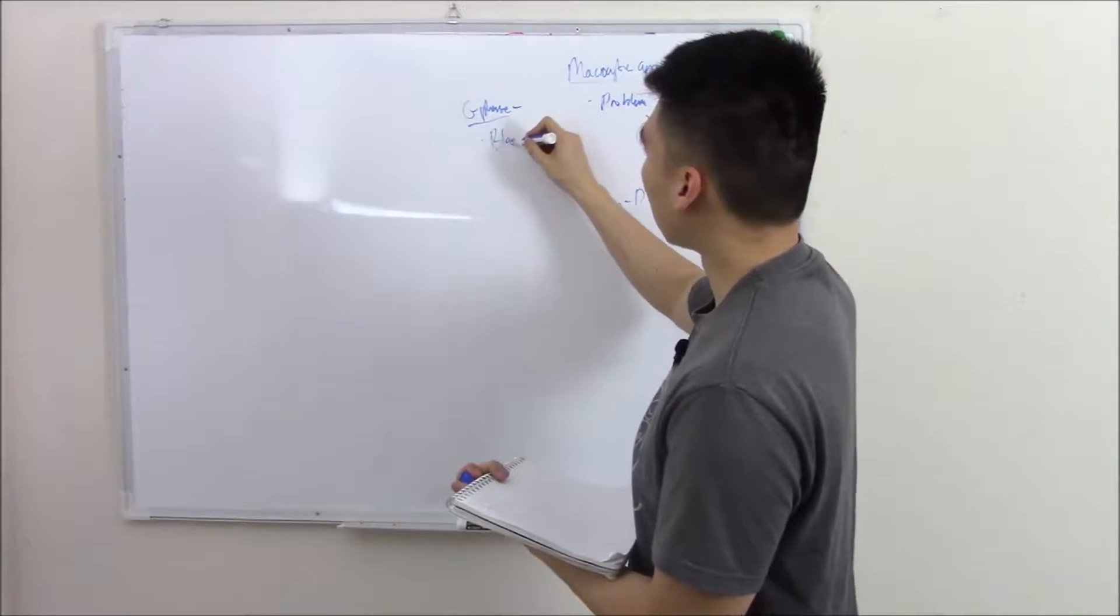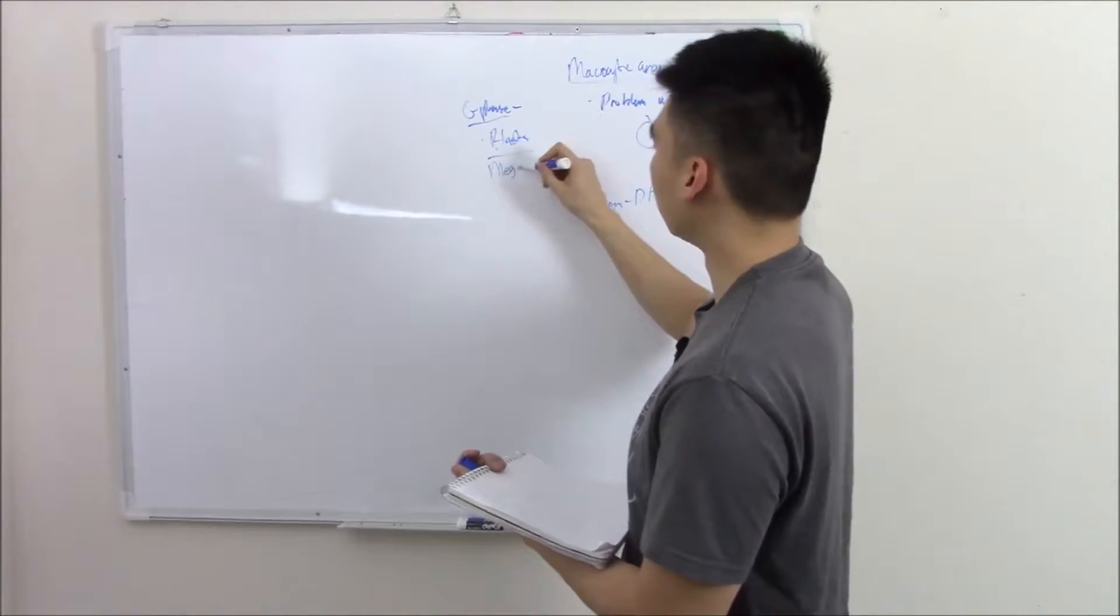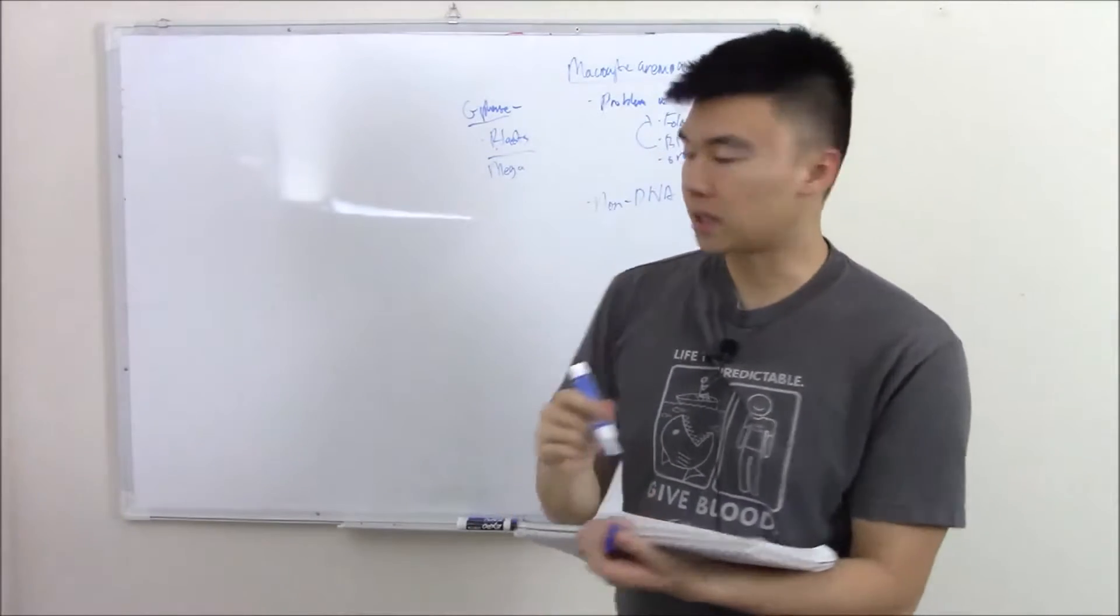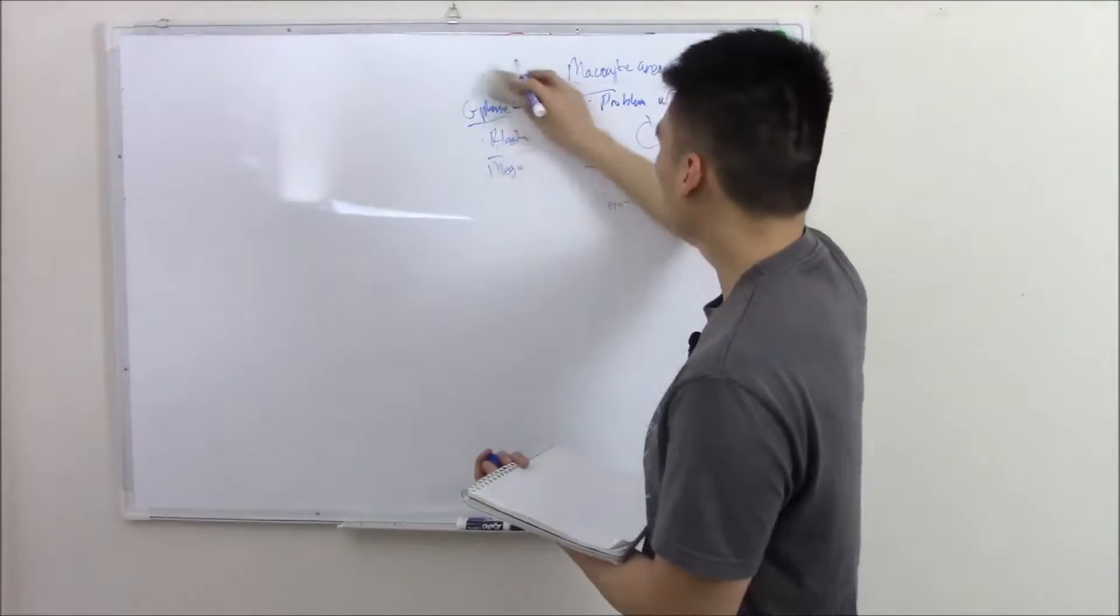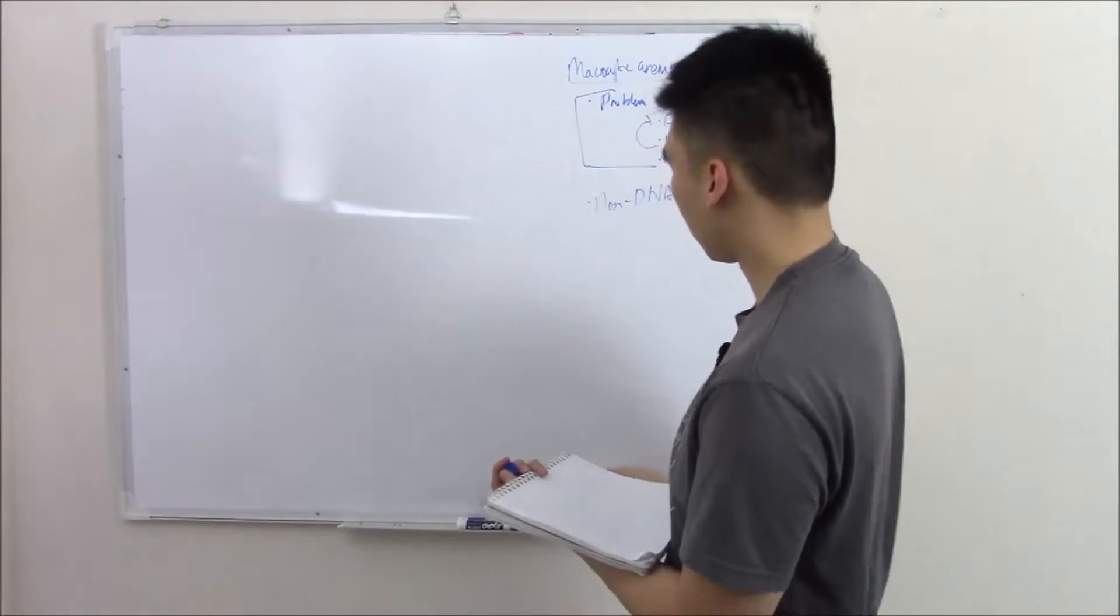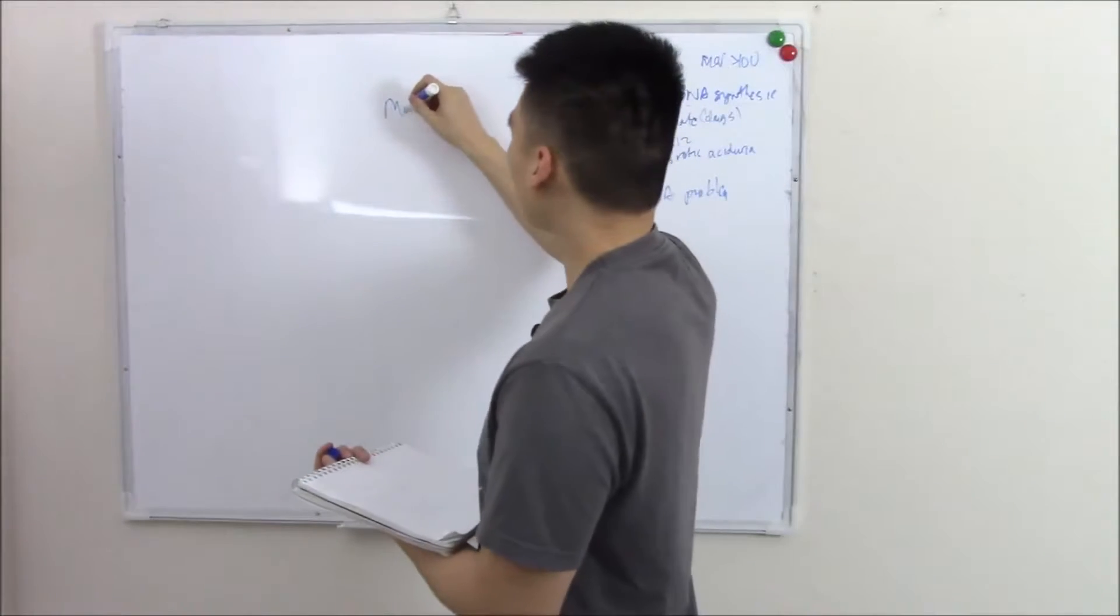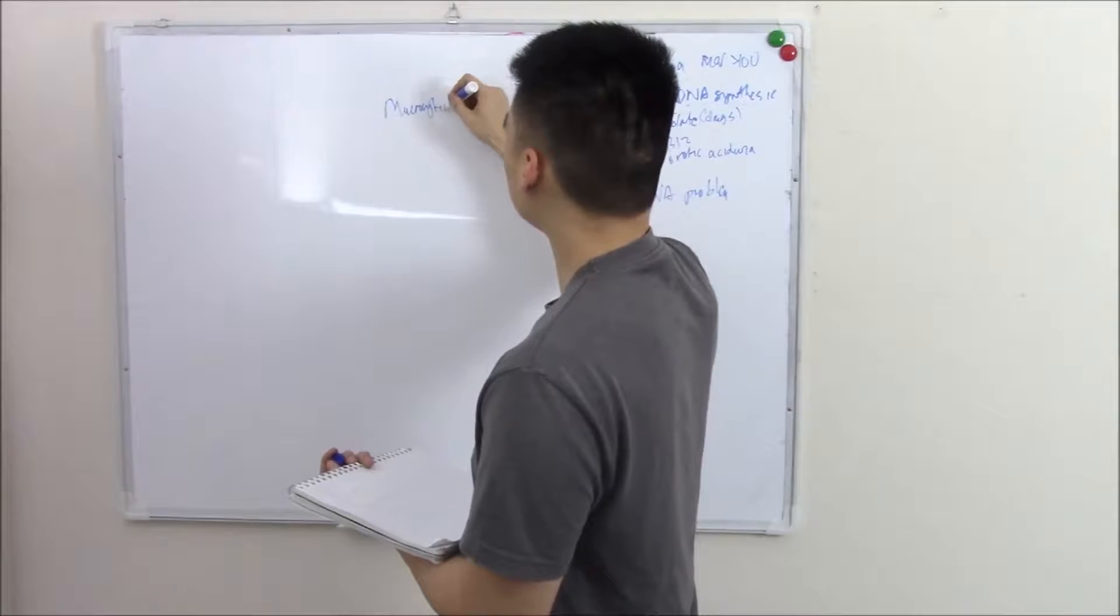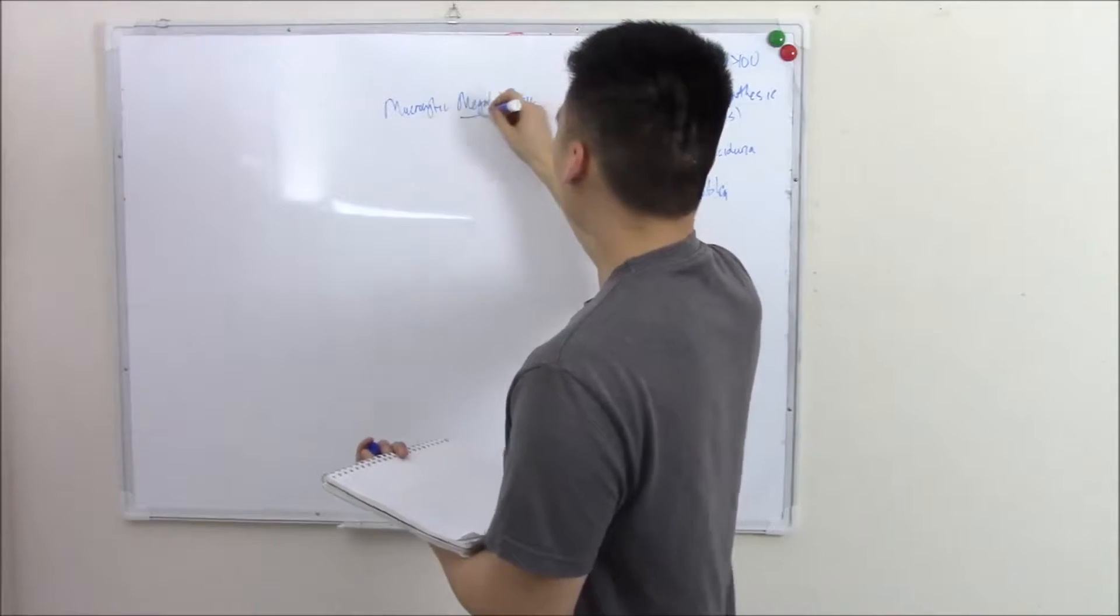So you see a lot of blasts. Recall we said blasts are just immature cells. So you see a lot of large blasts, and so the name we give this is macrocytic megaloblastic anemia—large blast anemia.